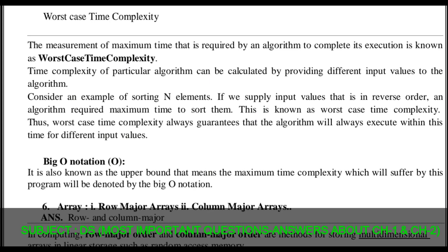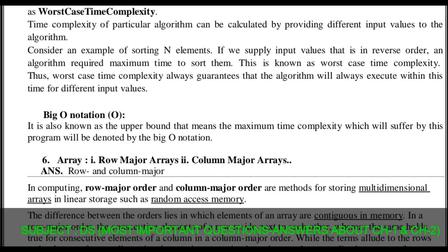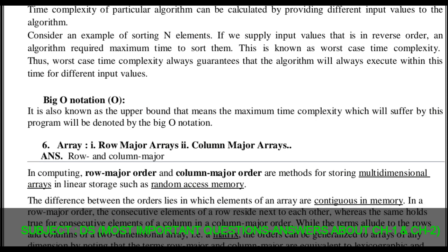Worst case time complexity is the maximum time taken to perform algorithm execution. Consider the example of sorting elements — if we supply input values that are in reverse order, the algorithm requires maximum time to sort them. That is known as worst case time complexity. Big O notation is also known as the upper bound — the maximum time complexity which will be suffered by the program is denoted by Big O notation.